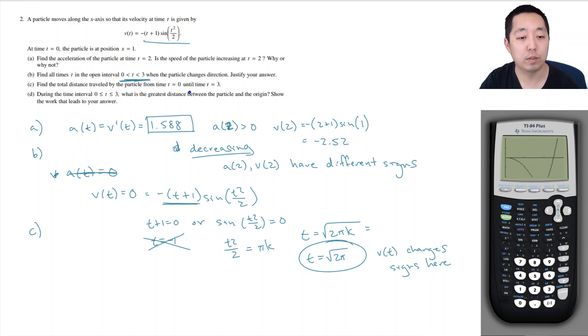Part C: Find the total distance traveled by the particle from 0. So total distance traveled is I integrate the absolute value of v of t dt. And so that's all I'm going to do. I'm just going to plug that into the calculator. Math, integrate. And I want to do absolute value. Where is the absolute value? I think it's in math. Absolute value. Your calculator can do absolute value. So that's why you want to do that. Negative x plus 1, sine of x squared divided by 2. I need to close the absolute value. Integrating over x, I'm going from 0 to 3. 4.334.